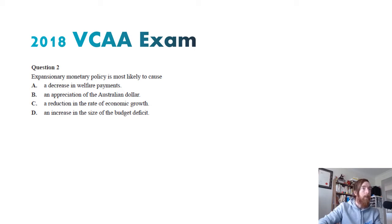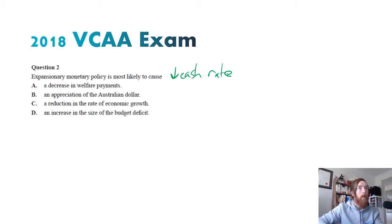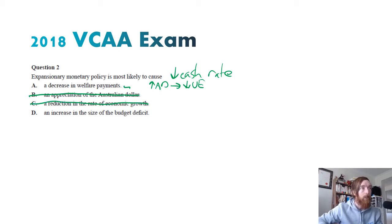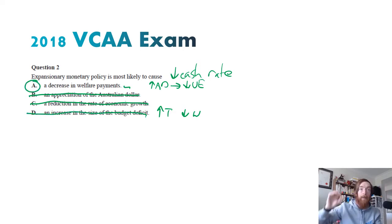Question two — expansionary monetary policy is most likely to cause what? Expansionary monetary policy means a decreased cash rate or interest rates. An appreciation in the Australian dollar? No — if we decrease the cash rate, foreign investors will take their funds out of Australian financial institutions looking for better returns elsewhere, causing a depreciation. A reduction in economic growth? We can rule that out since we're trying to stimulate aggregate demand. An increase in the budget deficit? We can rule that out too. The answer is A — a decrease in welfare payments, because of decreased unemployment.